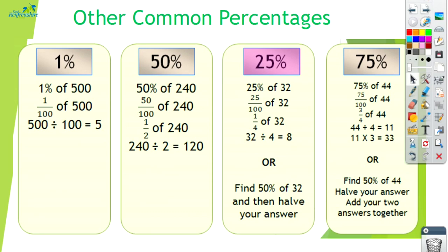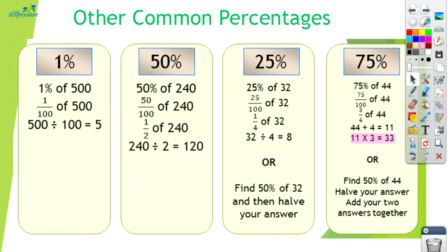For twenty-five percent there are two ways shown, but there may be more. Twenty-five percent of thirty-two is the same as twenty-five out of a hundred, or a quarter of thirty-two, so thirty-two divided by four is eight. Another way is to find fifty percent of thirty-two and then halve that answer. For seventy-five percent of forty-four: they know that's seventy-five out of a hundred, simplified to three quarters of forty-four. Divide forty-four by four to get eleven, then multiply eleven by three to get three quarters. They might also find fifty percent of forty-four, halve their answer, and add those two answers together.